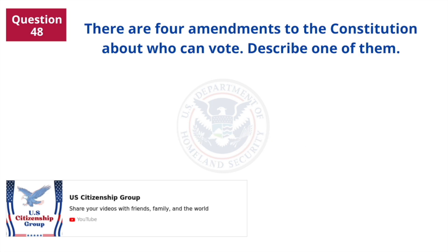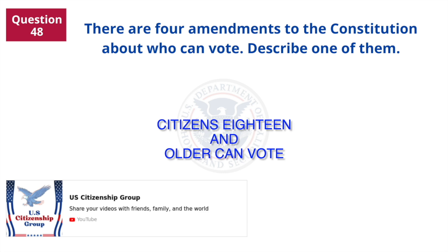There are four amendments to the Constitution about who can vote. Describe one of them. Citizens 18 and older can vote.